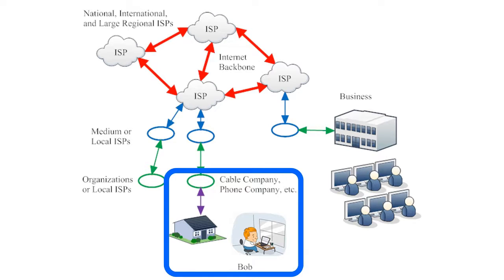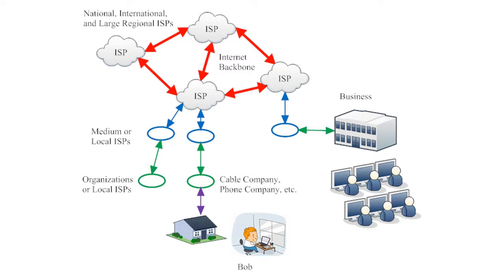The connection between the smallest tier of ISPs and an individual residence is represented by a purple arrow. That connection might carry a lot of information — streaming video, file downloads, or maybe online games — but that quantity of information is nothing compared to the quantity represented by the arrows higher up on the hierarchy.